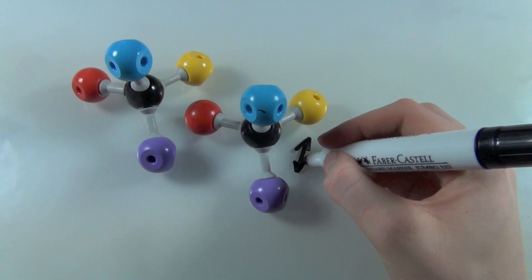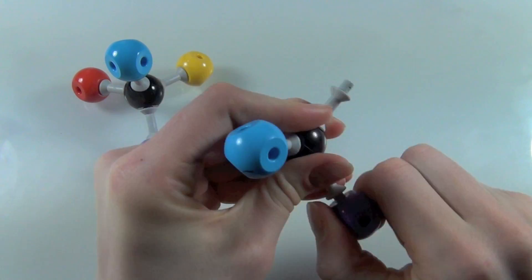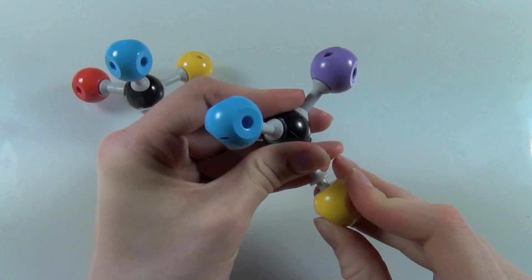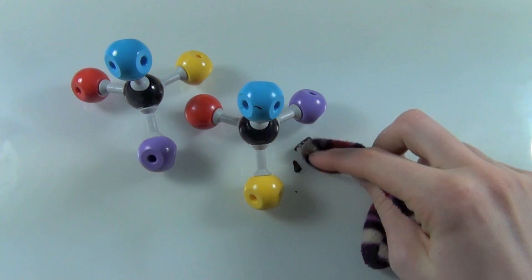So what you're looking at here are two identical molecules. All the colors are in the same place. And when I switch any two groups, in this case yellow and purple, you find that you get the other version of the molecule, the other enantiomer.